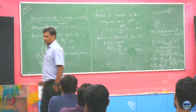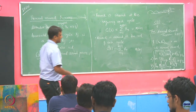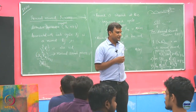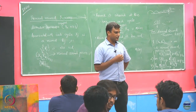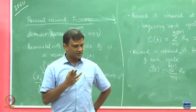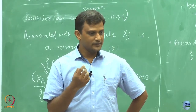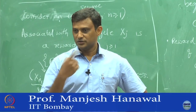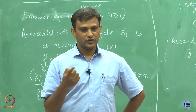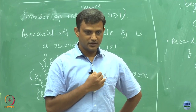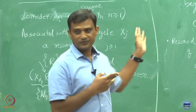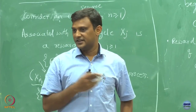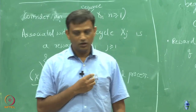This concludes our discussion of the renewal process and Renewal Reward Theorem. There are other aspects — such as the aging process and the residual life process — covered in the book. Their properties can be derived using similar ideas from the class, and you can read those independently.